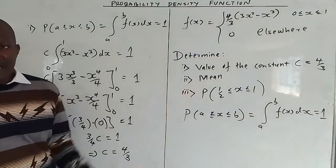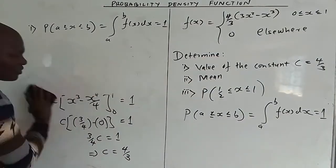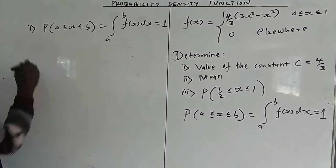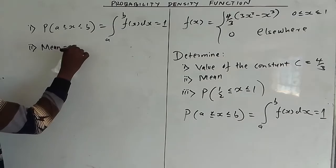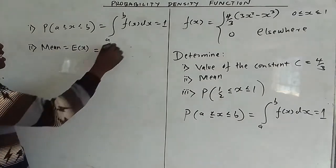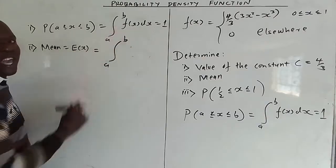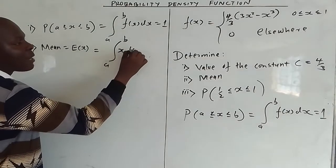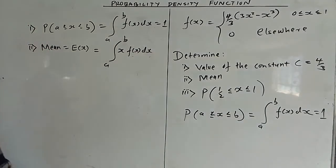Moving to part two, we want the mean. The mean is given as the expected value of x. The expected value of x means we integrate x times f(x) with respect to x over the full range, and that gives us the mean.